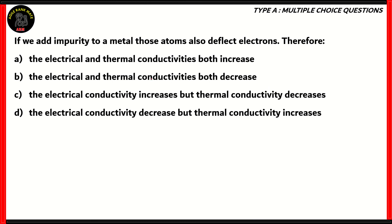Now let's look at the final question of the day. If we add impurity to a metal, those atoms also deflect electrons. Therefore, what happens to electrical and thermal conductivities — do both increase, both decrease, does electrical conductivity increase but thermal decrease, or does electrical conductivity decrease but thermal conductivity increase? This question is based on an assertion given in the question, and we need to figure out what follows from it.